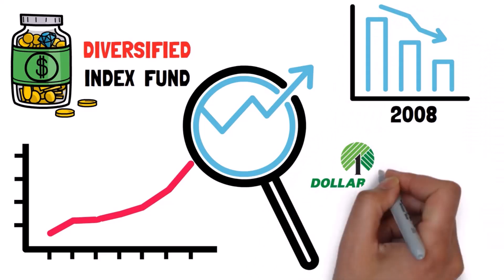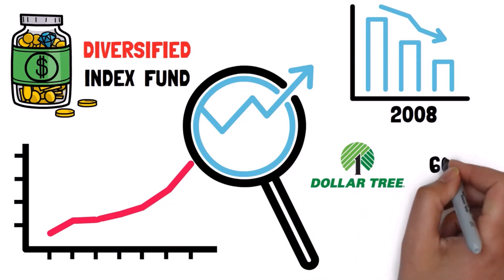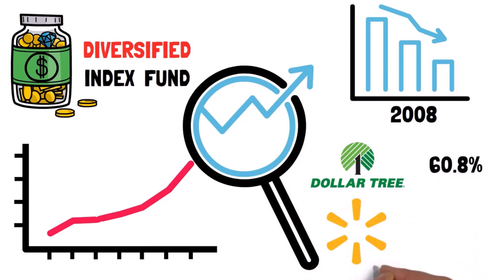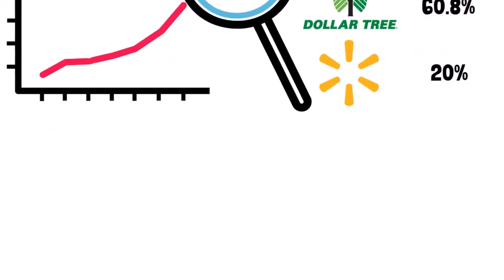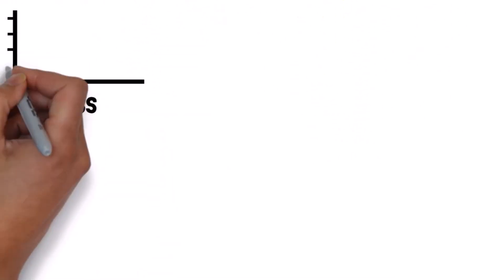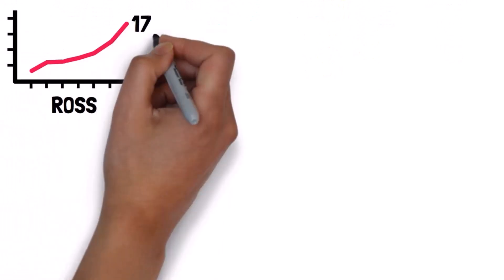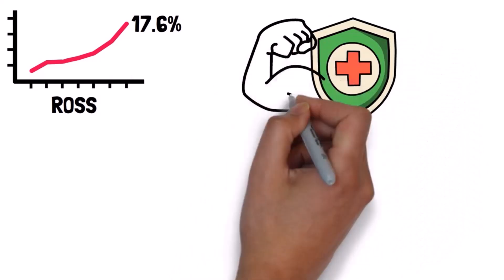During the 2008 recession, certain stocks defied the downturn. For example, Dollar Tree saw an annual return of 60.8%, Walmart had a 20% return, and Ross, a low-cost clothing company, had a 17.6% gain.